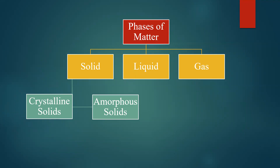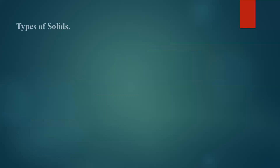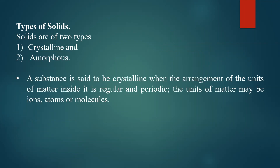Only the classification of solids based on structure is considered in this section. Solids are classified into crystalline solids and amorphous solids based on their structure, and based on the structure they will have different properties. A substance is said to be crystalline when the arrangement of units of matter inside it is regular and periodic.